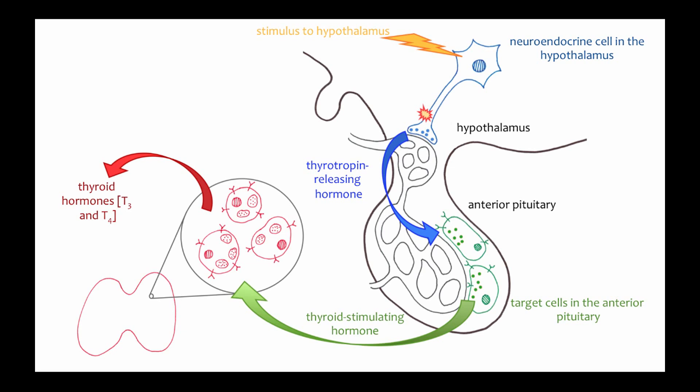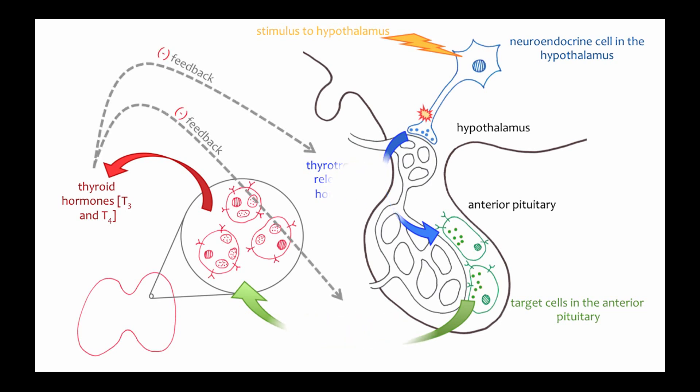So does it end there? How is the system turned down once the need for these hormones is over? Here we need to go back to the concept of negative feedback control discussed in the chemical communication video. High levels of T3 and T4 exert negative feedback control on the hormones that lead to their release. So when levels of T3 and T4 are high, they turn down the production and release of both thyrotropin releasing hormone and thyroid stimulating hormone.